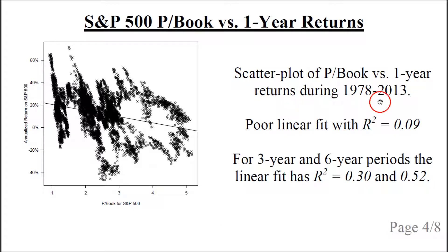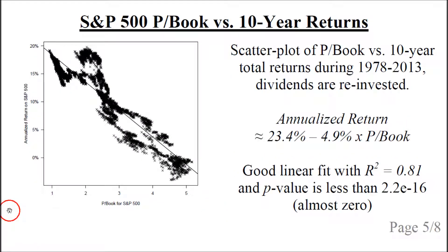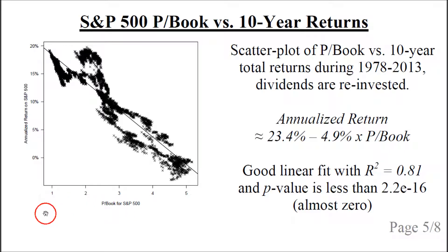What we have done is taken the data for the period 1978 to 2013, and for each day we looked up the price-to-book ratio and the return for the following year, then plotted all these data pairs. If we do that for investment periods of three years or six years, the fit becomes a little better — the R-squared value is 0.30 and 0.52 respectively — but it's still not that good. So let's look at 10-year investment periods. We take all starting dates in this period, look up the price-to-book ratio, and calculate the annualized return if we invest in the S&P 500 and reinvest the dividends for 10 years. Then we plot all the results in the scatter plot and fit a straight line.